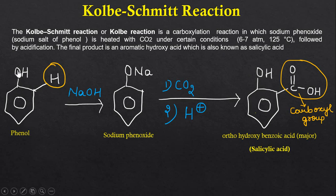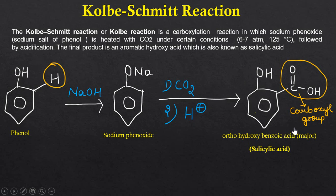In this reaction, the phenol is first treated with sodium hydroxide, which is a base, and this base will remove this acidic proton and we will get sodium phenoxide. Now this sodium phenoxide is heated with CO2 under certain conditions like 6 to 7 atmospheric pressure and 125 degrees centigrade temperature, followed by acidification, and we will get salicylic acid, which is orthohydroxybenzoic acid. It is a major product of this reaction.